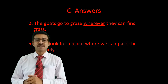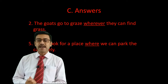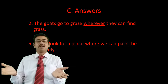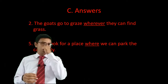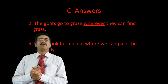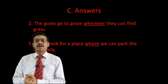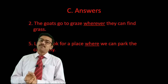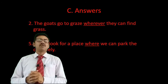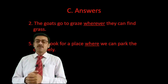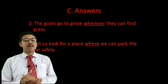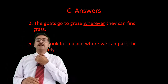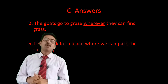Sentence number two answer: 'The goats go to graze wherever they can find grass.' The goats have no specific choice — wherever they see grass or greenery, they will go there. Sentence number five answer: 'Let us look for a place where we can park the car safely.' As we learned, 'wherever' and 'where' both talk about place. That is how you complete exercise C.